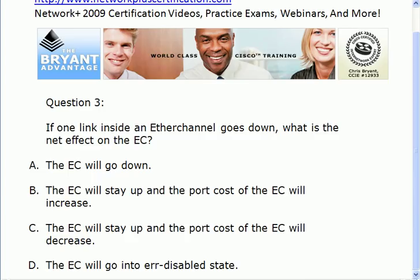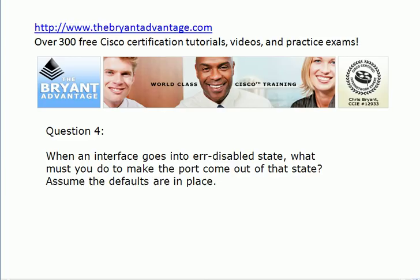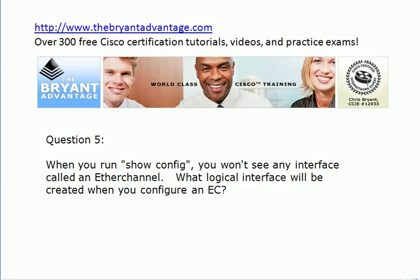You'll see your multiple-choice options there, and when we go through the answers we'll actually do that live so we can see it happen. Question four: when an interface goes into error disabled state — regardless of whether you're working on an EtherChannel or not, because there are other reasons it can do that — what do you have to do to make the port come out of that state? We are assuming the defaults are in place. Finally, question five: when you run show config, you will not see an interface called an EtherChannel. What logical interface will be created when you configure an EtherChannel?